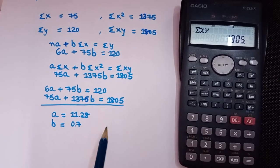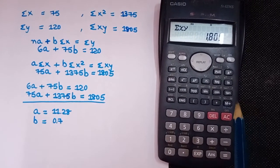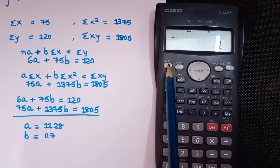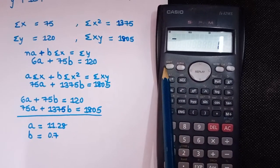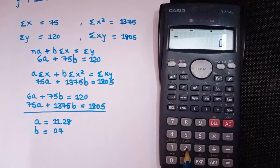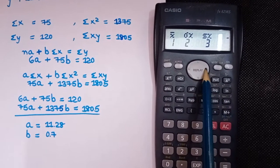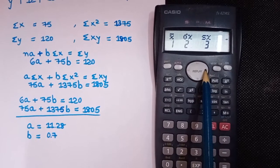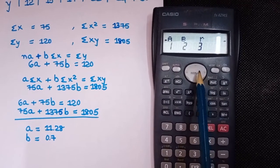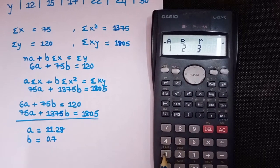We need the values of A and B, and from your calculator you will get direct values of A and B. To do that, press Shift then S-VAR, that is Shift 2, then click Next — once, twice, three, four, five times — until you see A and B.